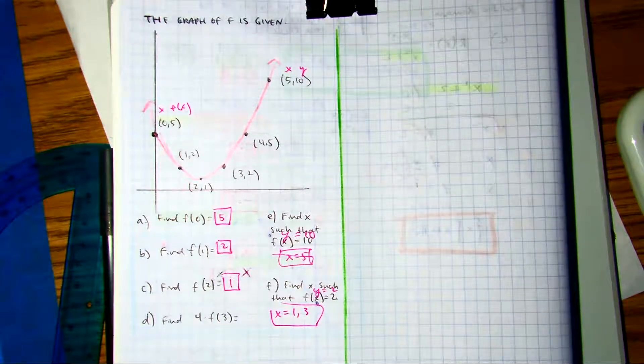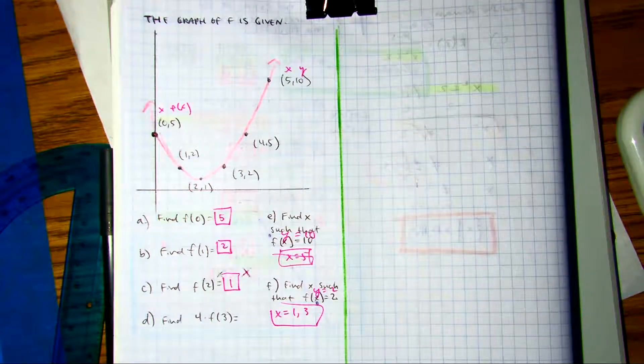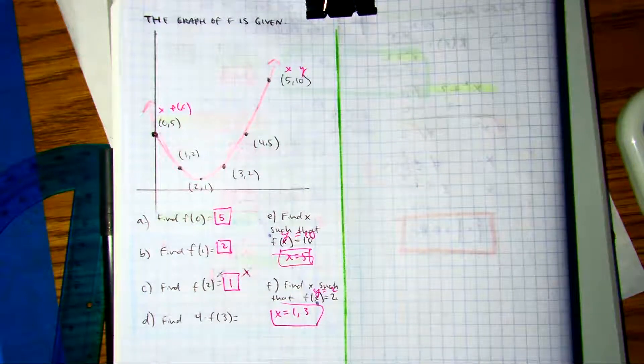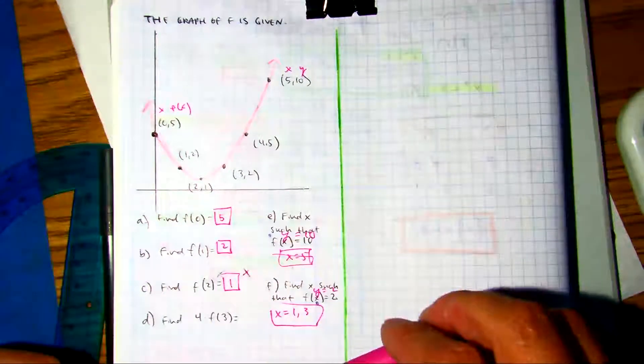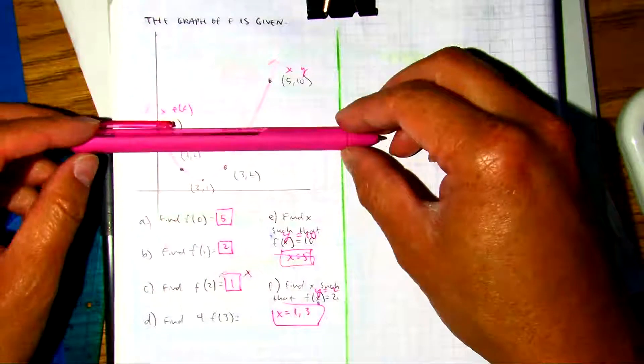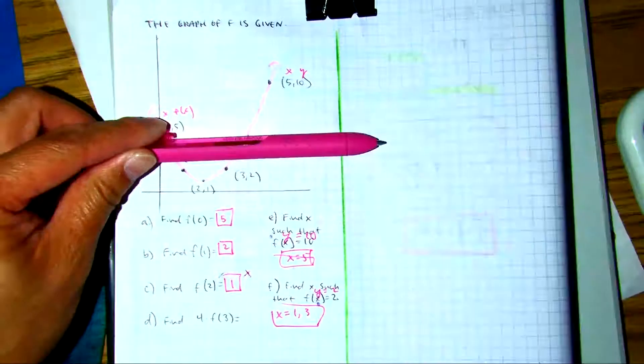F of three. Everyone put your pen at three. Jonathan, you're gonna just have to make a judgment call. What do you think that number is?